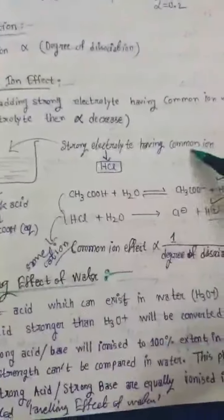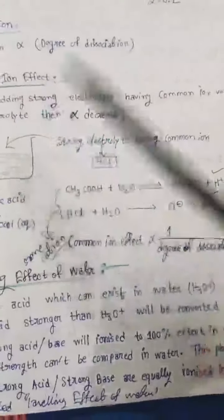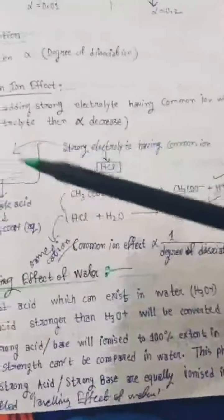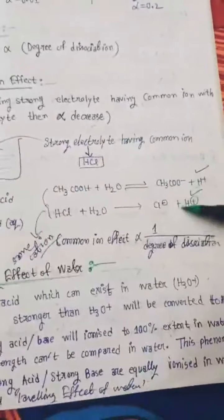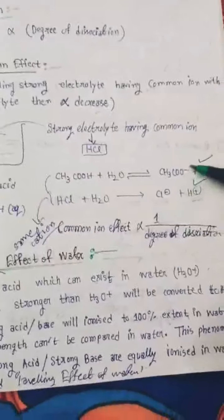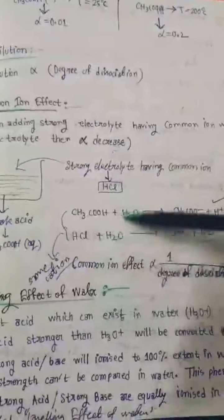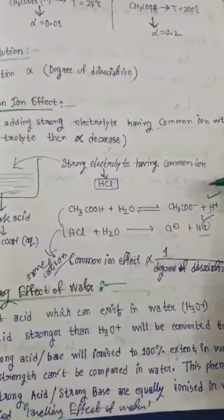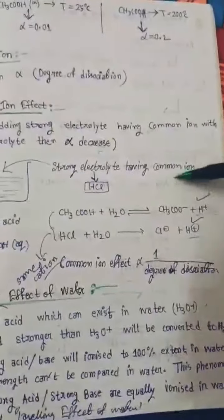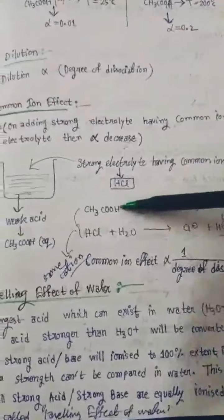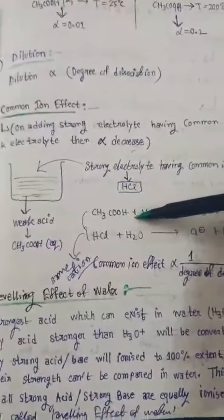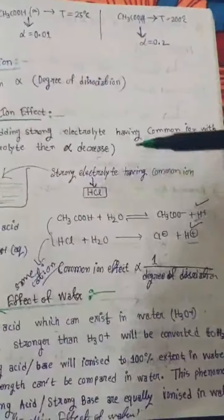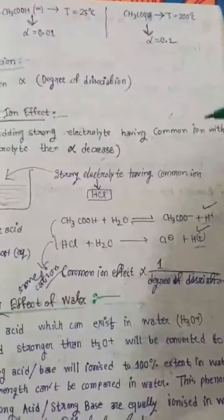এবার যদি strong electrolyte HCl externally add করা হয়, সেক্ষেত্রে আমরা দেখবো যে একটা common ion তৈরি হচ্ছে। সেই same cation সেক্ষেত্রে তৈরি হচ্ছে — এই common ion সিস্টেমকে reaction টাকে backward করাবে, অর্থাৎ alpha কিন্তু decrease করবে। তাই বলছে common ion effect is inversely proportional to degree of dissociation.